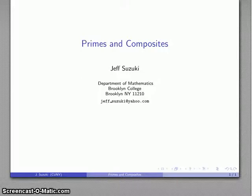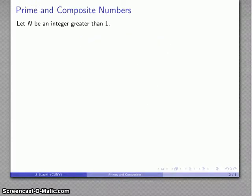One of the key concepts in number theory is the idea of a prime and a composite number. These come about as follows. Let n be some integer that's greater than 1.